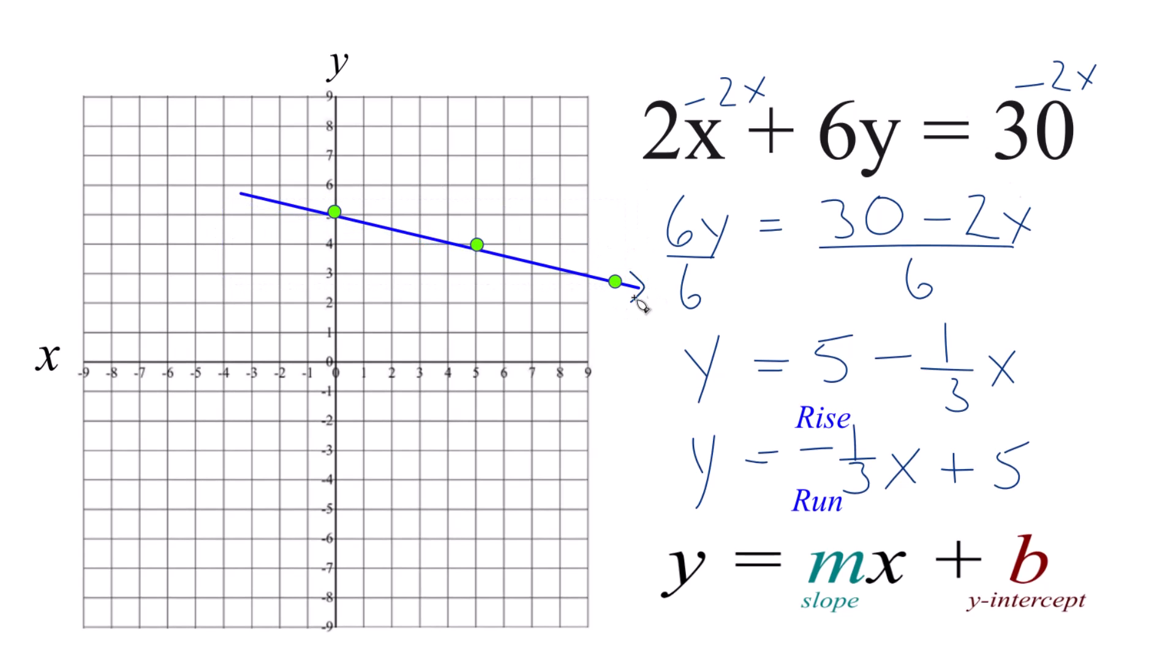And that would give us the equation for 2x plus 6y equals 30. So you'd want to extend your graph paper out here some in this case. But that's it.